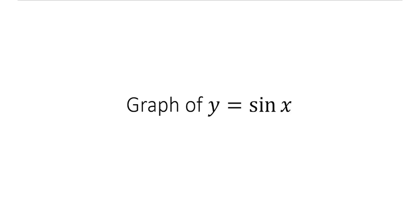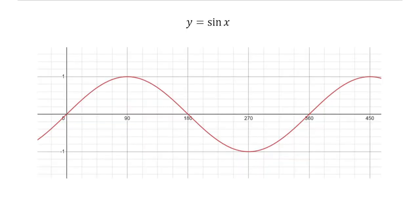In the next few videos we're going to be looking at the graphs of sine, cos, and tan. We're just going to focus on the graph of sine. Here's the graph of sine — a couple of things to notice: one complete wave takes 360 degrees. One wave starts at zero, goes up, comes down, and completes one wave in 360 degrees.